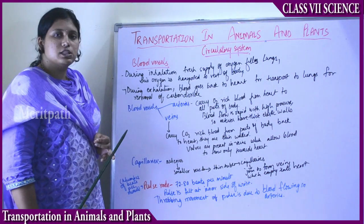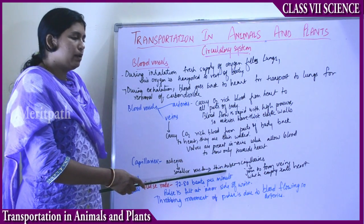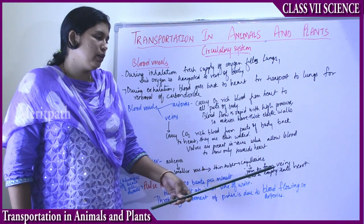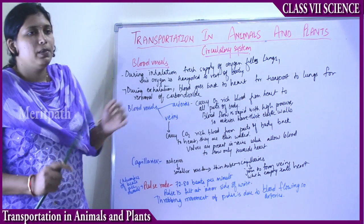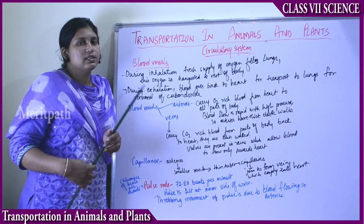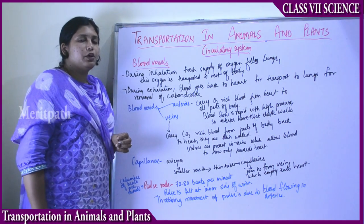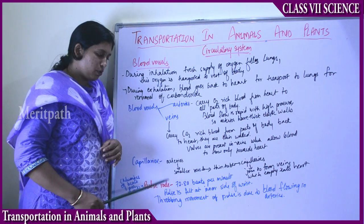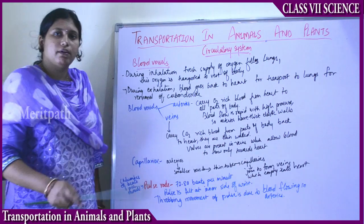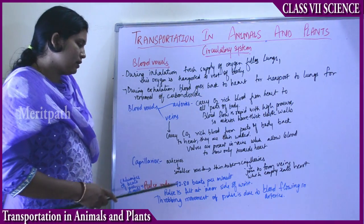Arteries are divided into small thin tube-like structures called capillaries. Capillaries join to form veins, which empty into the heart. So oxygen-rich blood from the heart travels through arteries, arteries divide into capillaries, and these capillaries again join to form veins which transport the blood back to the heart from various parts of the body.